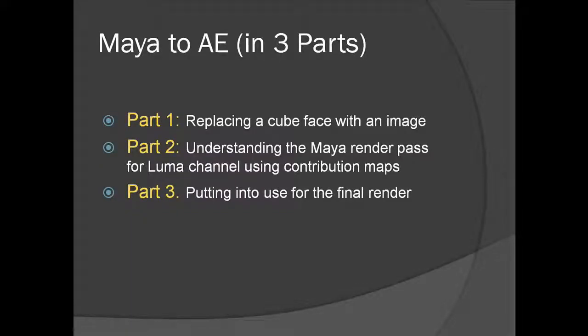I've divided this tutorial into three parts. The first part I'll explain how to replace a small cube face which you make in Maya, get it back to After Effects, get the camera information, and replace one of the cube faces with an image. Part two will be to export the Maya render for a billboard, export the camera information, locator information, and luma channels — how to export luma channels using contribution maps in Maya.